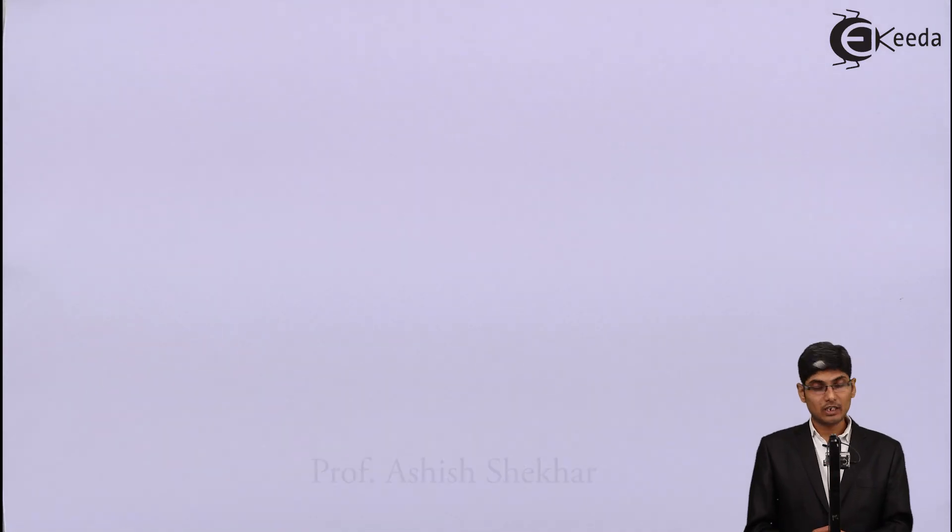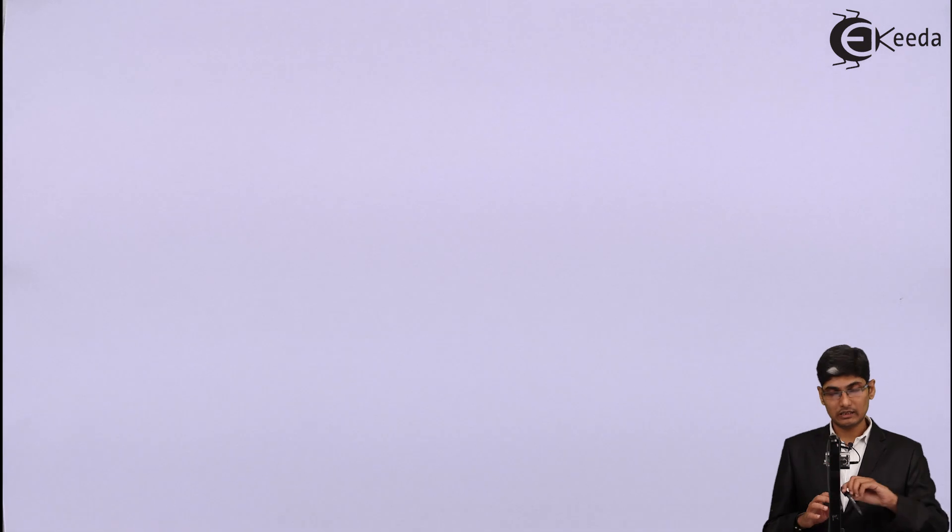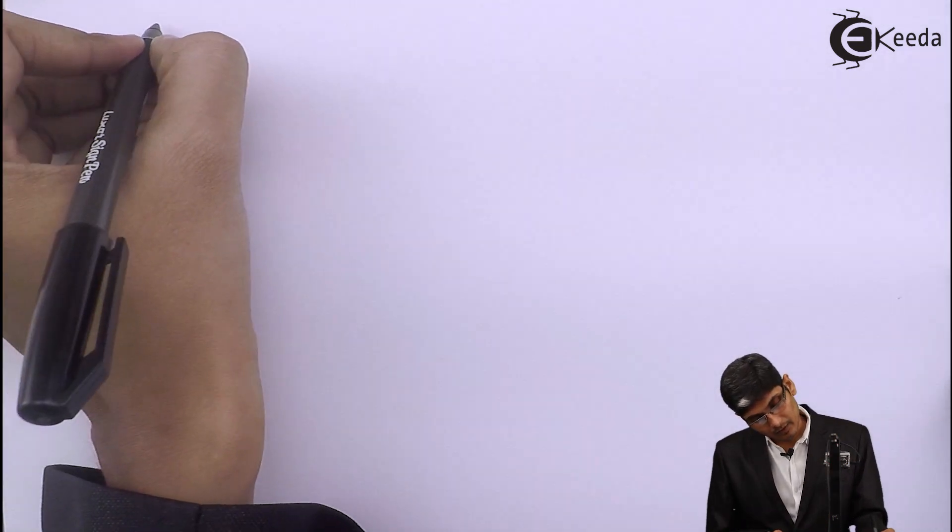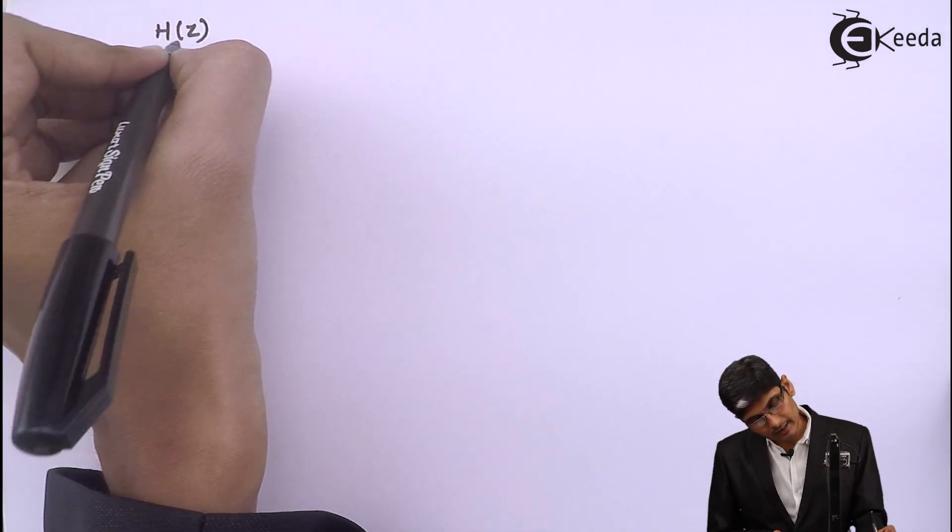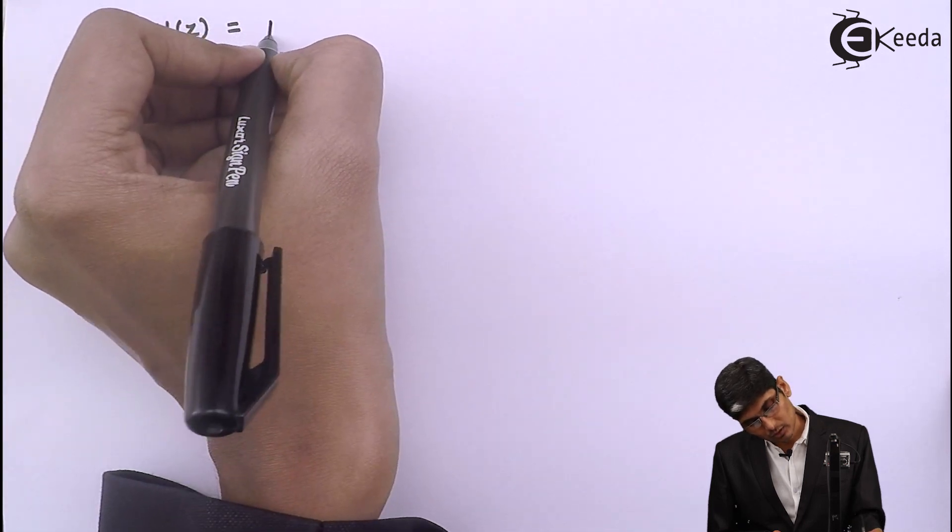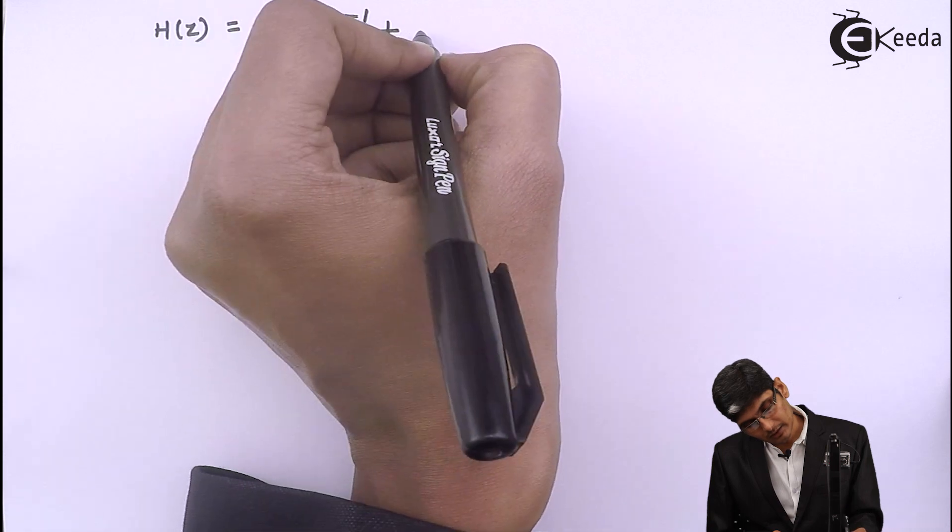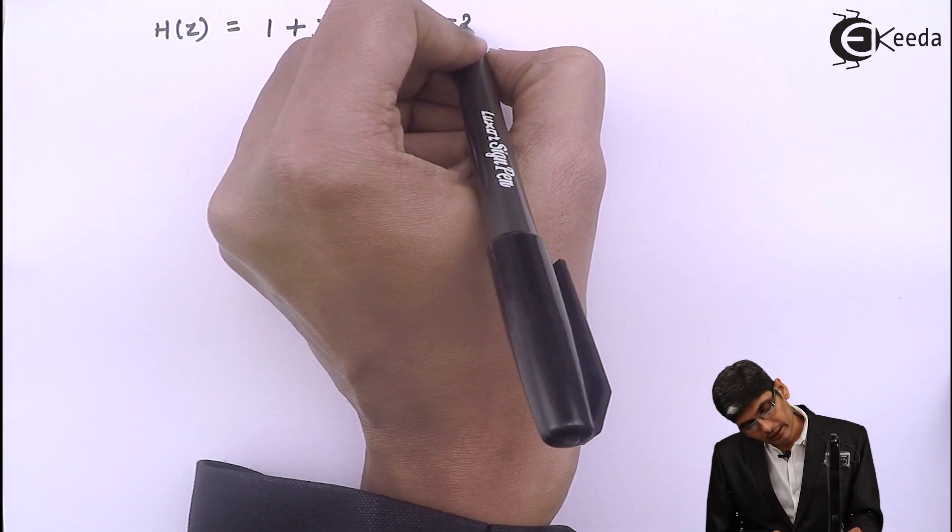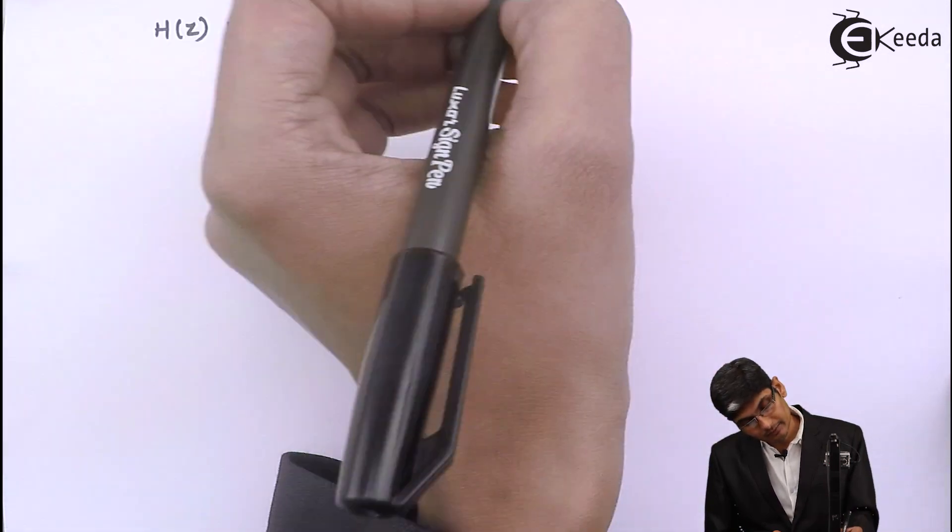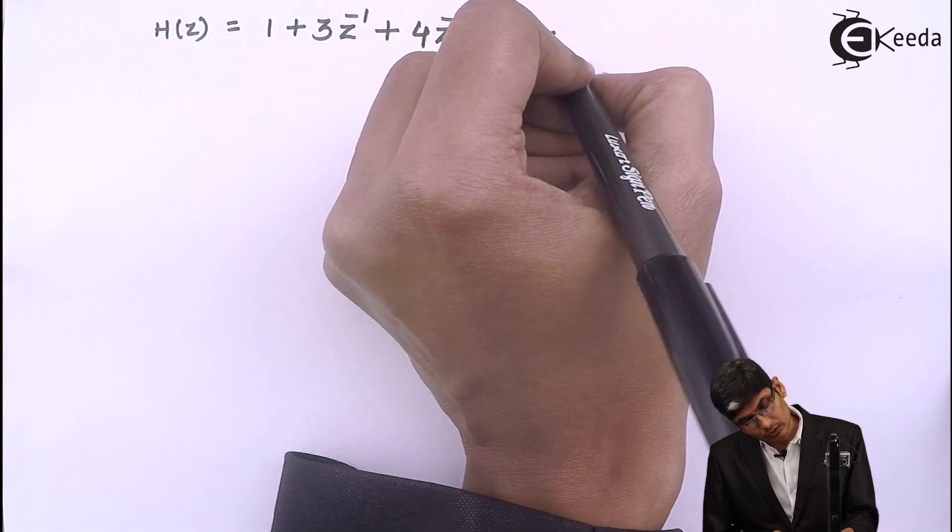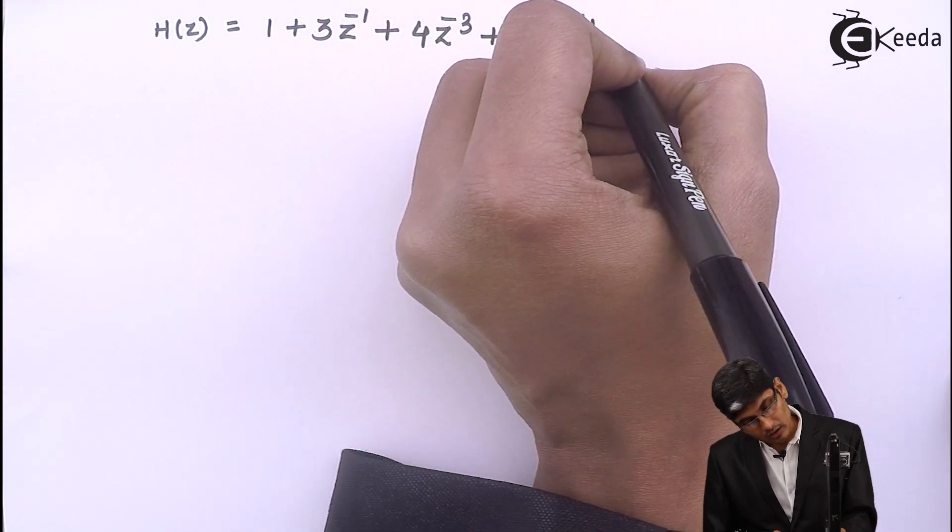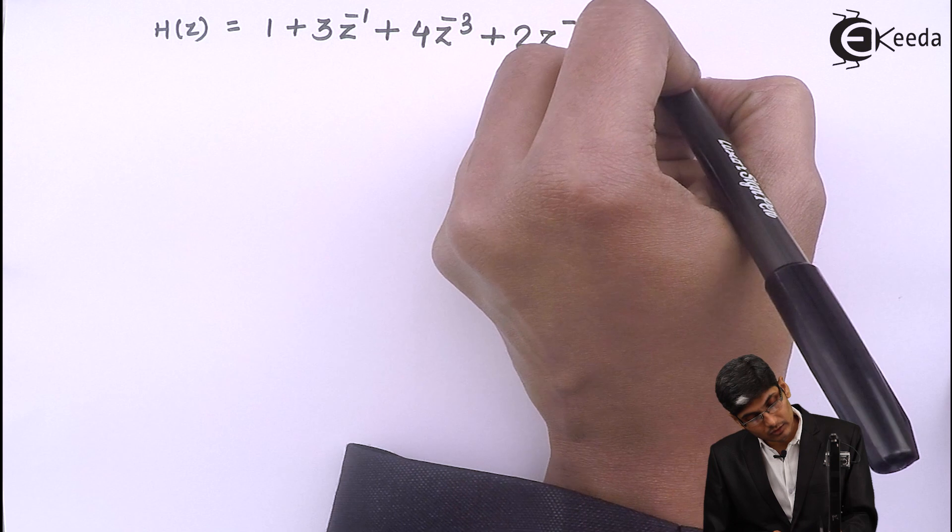Hi friends, today we are going to see how we are going to implement an FIR structure using direct form. Now, the problem for today is H(z) equals 1 plus 3z^-1 plus 4z^-3 plus 2z^-4 plus z^-5.